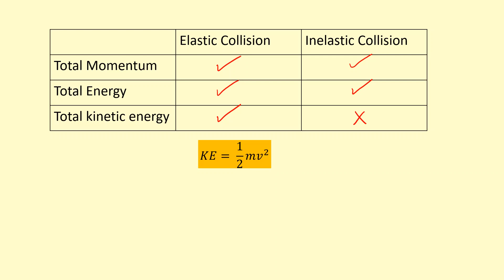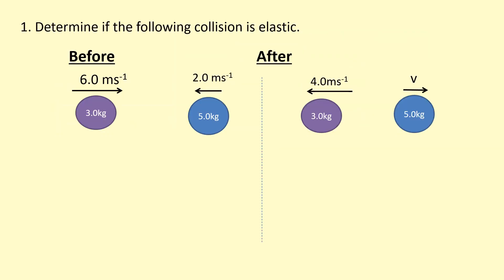Okay, we want to determine if this collision is elastic. We don't know what the v here is, but if we use conservation of momentum, just like in the last video, we can figure this out. So this is going to be—turns out it's four meters per second towards the right.